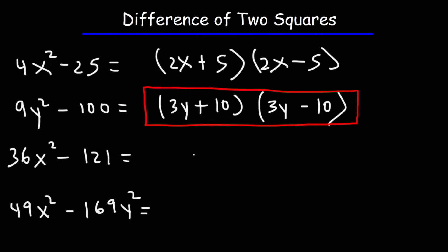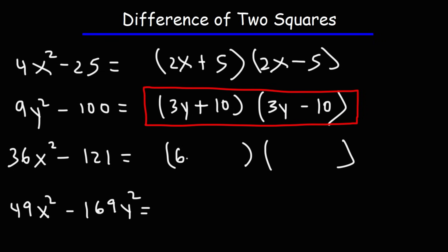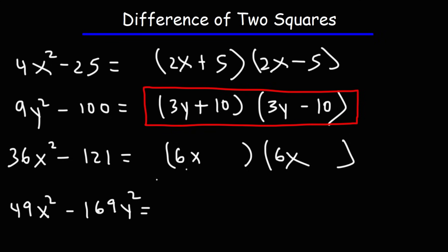Now let's move on to the next one: 36x squared minus 121. The square root of 36 is 6, and the square root of x squared is x, so the square root of 36x squared is going to be 6x. The square root of 121 is 11. So this is going to be 6x plus 11 times 6x minus 11.